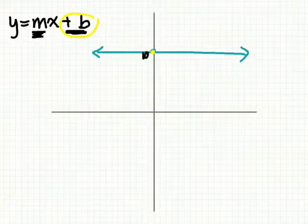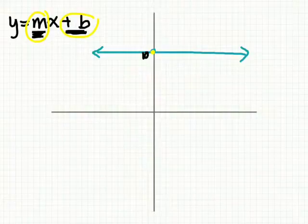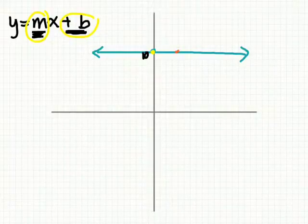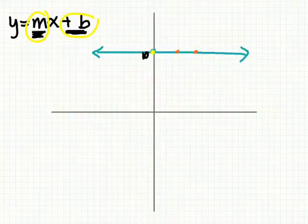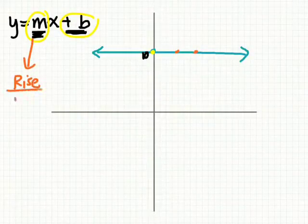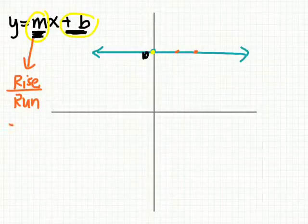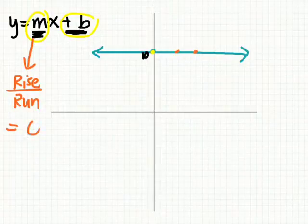We also need to figure out what is the slope of this line. Well, we can count. Remember, you can pick any two points on a line and count the rise and the run. So let's say we pick this point and this point, and I want to know what is the slope. Well, I know slope is equal to rise over run. Does this line have a rise if it's horizontal? Does it rise? No, so the rise would be zero.